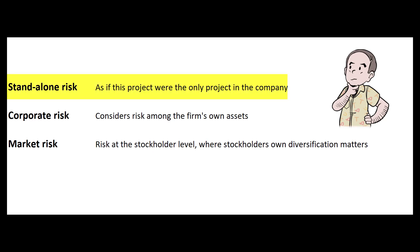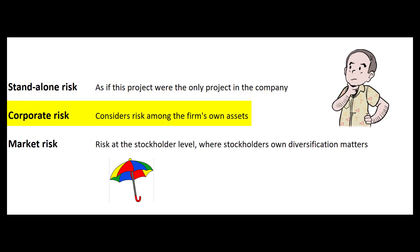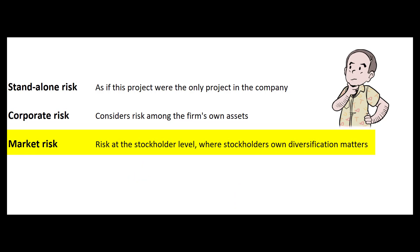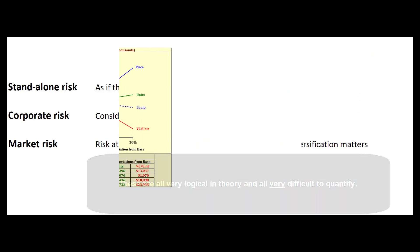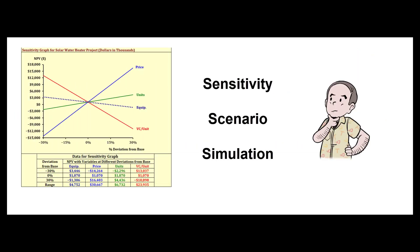Now that we know the cash flow estimations, how risky is this project? There are theoretically three kinds of risk: standalone risk (if this were the only project in the company), corporate risk (how it fits with our other assets — e.g., an umbrella company buying a suntan lotion company), and market risk at the stockholder level. The last two are harder to evaluate, so let's focus on standalone risk — which I think of as the three S's: sensitivity, scenario, and simulation.